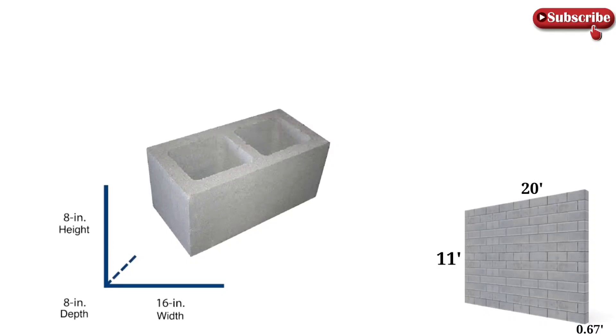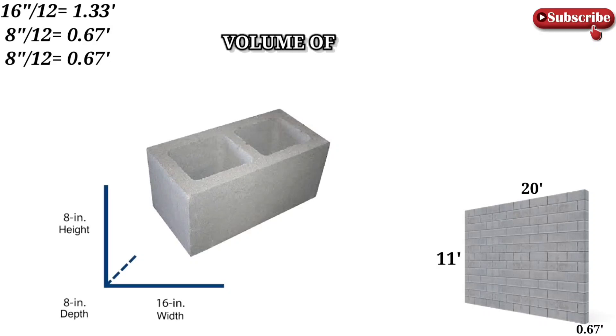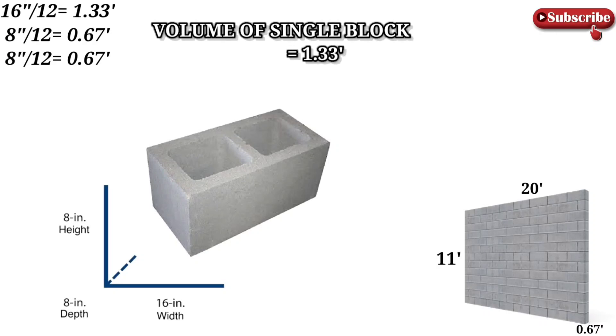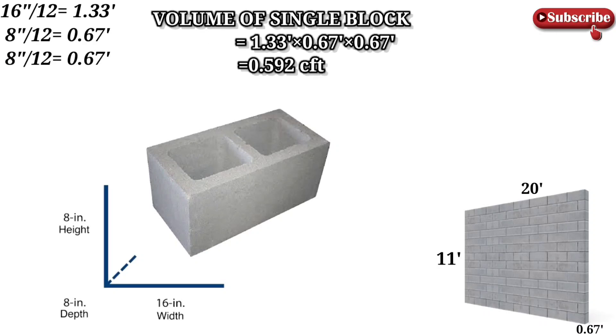We know that 1 foot equals 12 inches. So 16 inches divided by 12 gives 1.33 feet. Then 8 inches divided by 12 gives 0.67 feet, and again 8 inches divided by 12 gives 0.67 feet. Now all dimensions are in feet. The volume of a single block is 1.33 multiplied by 0.67 multiplied by 0.67, which equals 0.592 cubic feet.